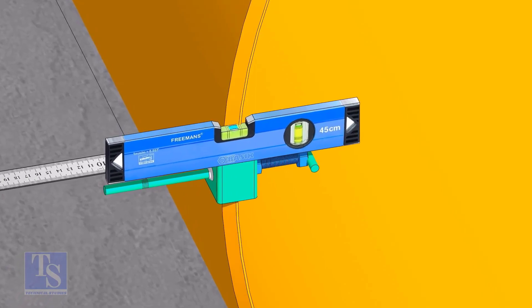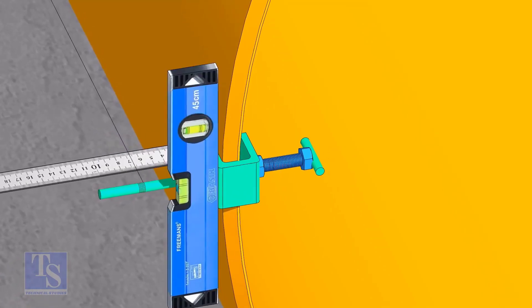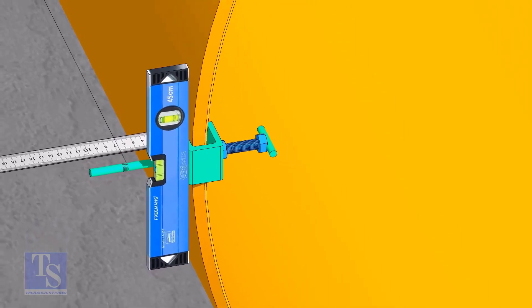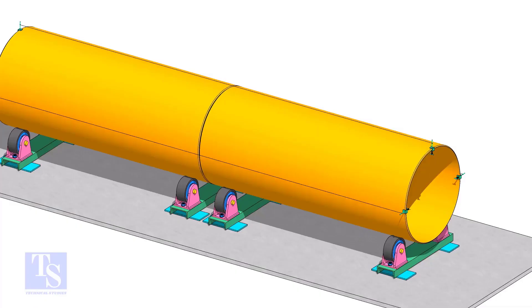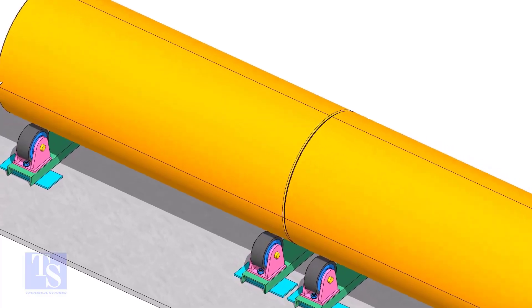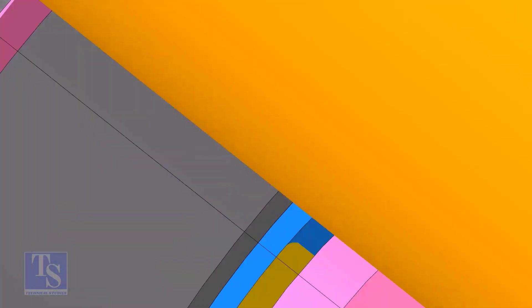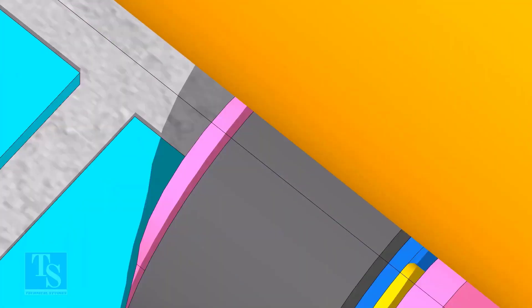As you put the clamp roughly 90 degrees apart, make sure the clamps are level. Tie the piano wire tightly on these clamps. Make sure the distance between the shell to the piano wire is equal at both ends.